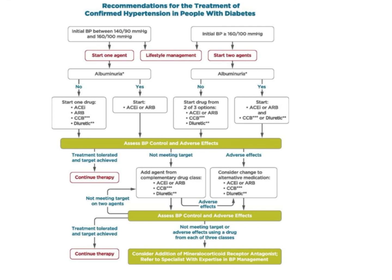Start one agent. Most of the time, your first agent is going to be either an ACEI or an ARB — that is an angiotensin receptor blocker or an ACE enzyme inhibitor. Sometimes, even calcium channel blockers can be given to such patients. If there is no albuminuria, then you continue with these agents. If albuminuria starts, then you give the patient either an ACEI or an ARB, and you monitor the blood pressure on a periodic basis.